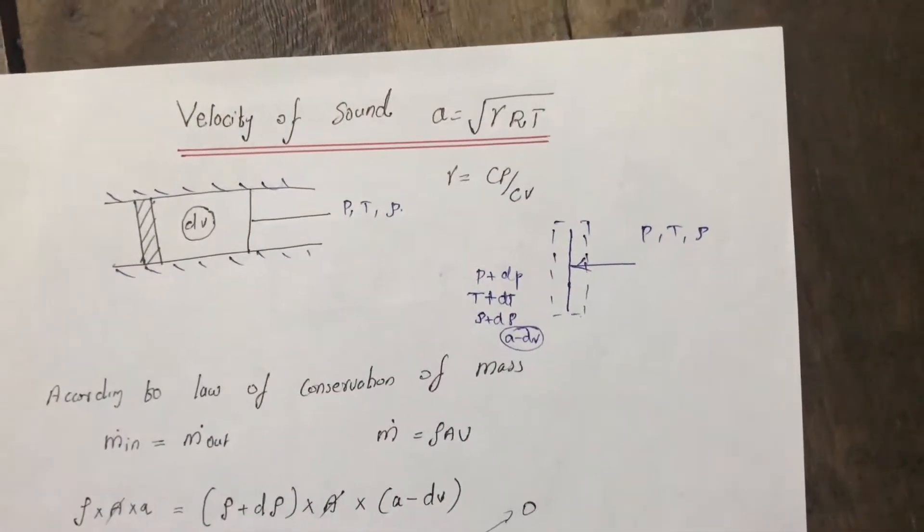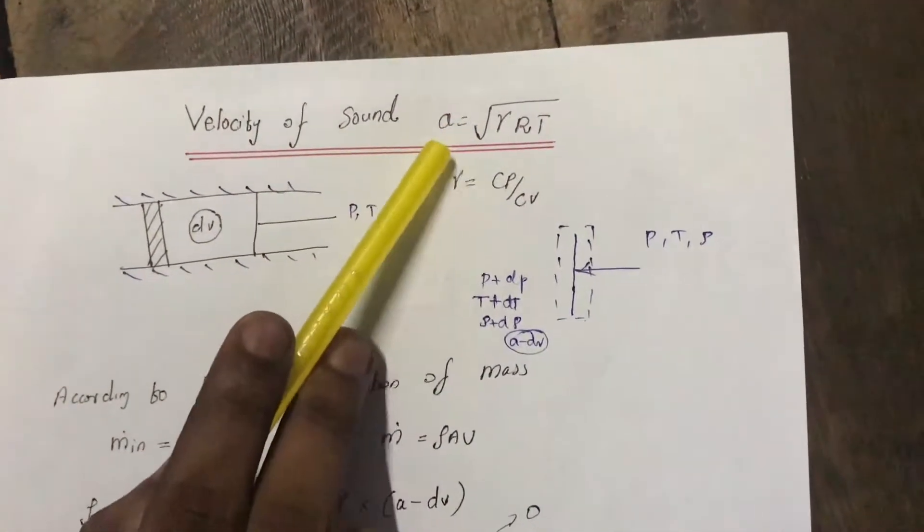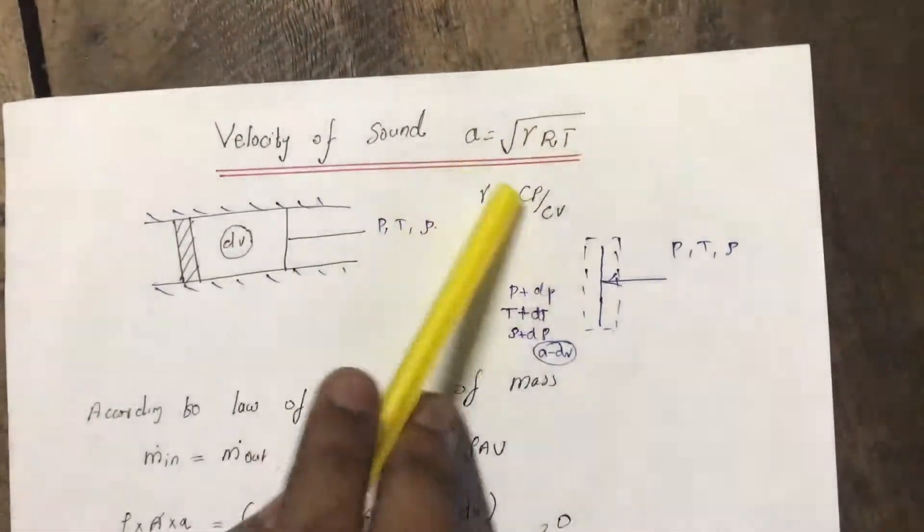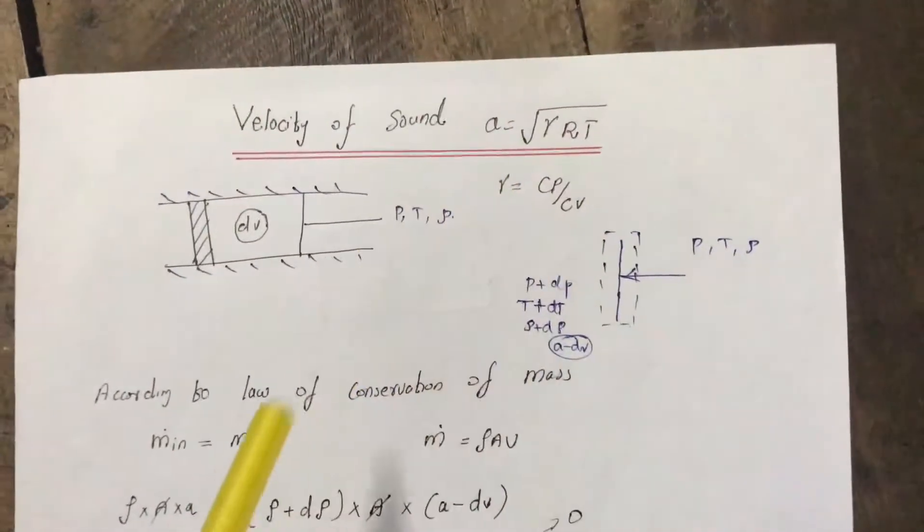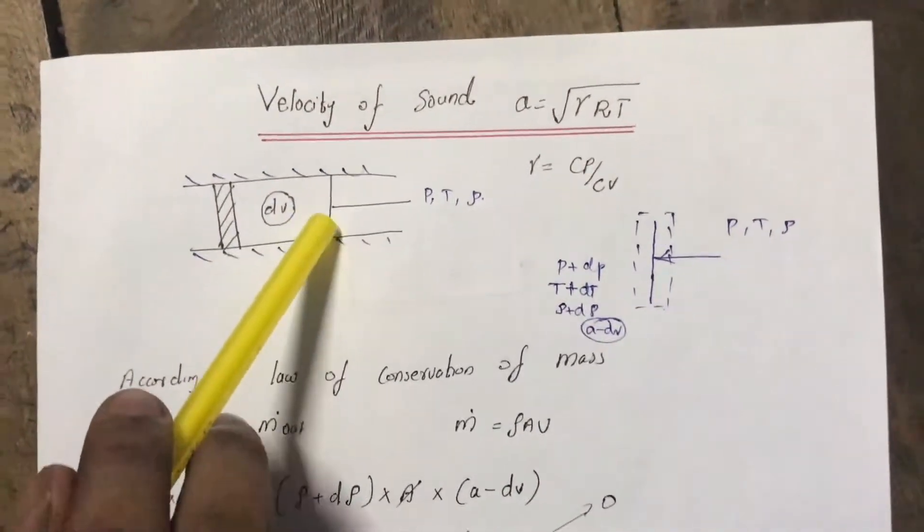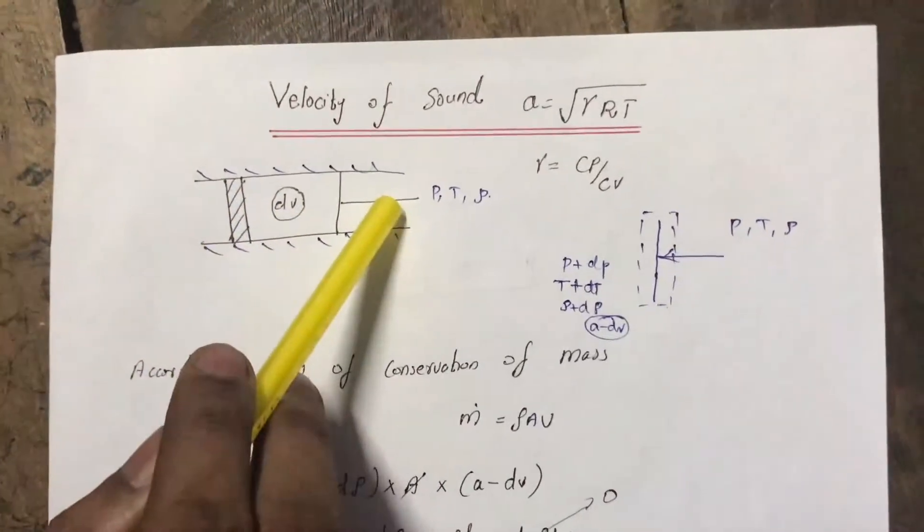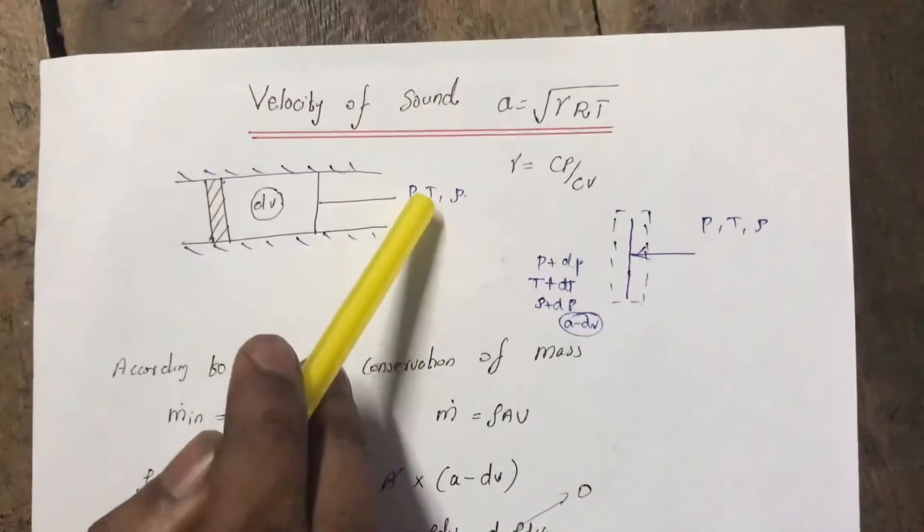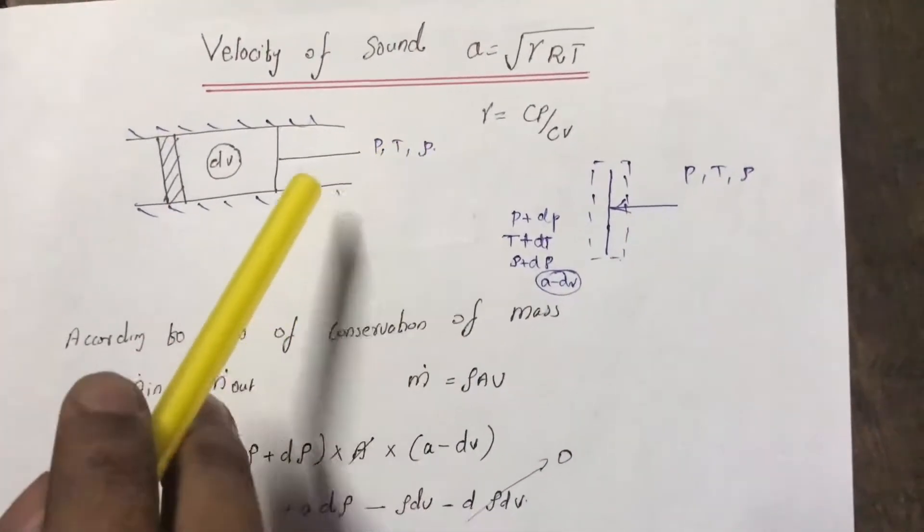Here we are going to find an expression for the velocity of sound in a particular medium, that is a equals root of gamma RT. This is the derivation that we are going to prove. Now for this, let us consider a long insulated narrow tube inside which a movable piston is placed. Let p, T, rho be the gas temperature, pressure, and density inside the tube.